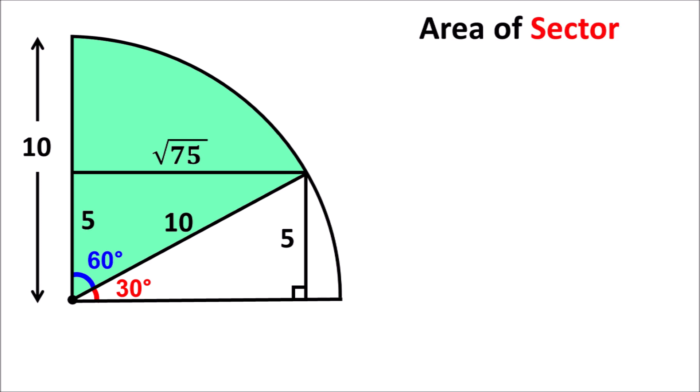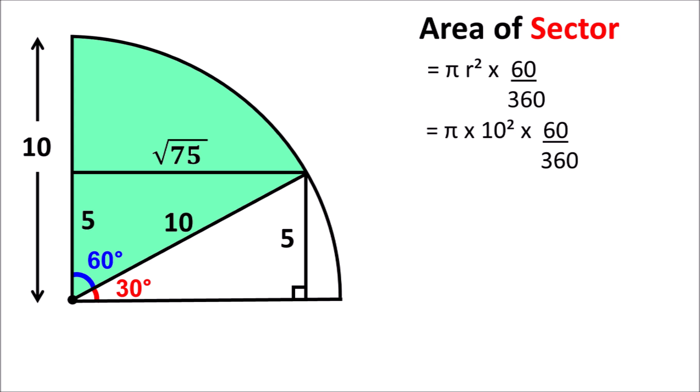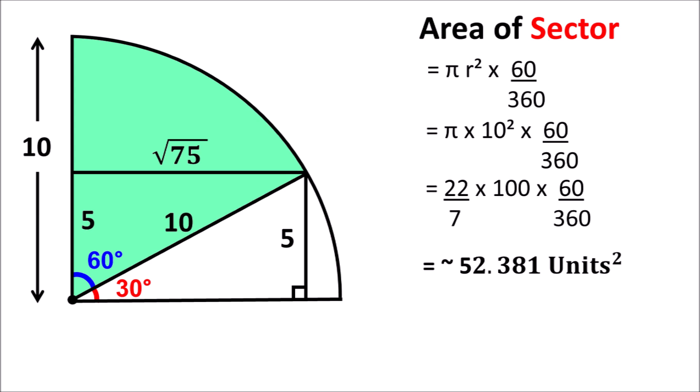Now we can calculate the area of the green highlighted sector, which equals pi r squared multiplied by 60 divided by 360. With r equal to 10 and pi equal to 22 over 7, the area of the sector is approximately equal to 52.381 square units.